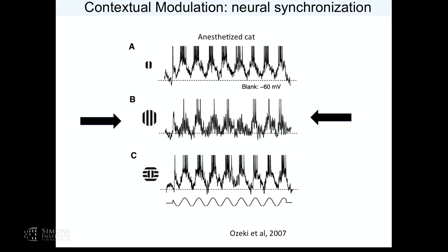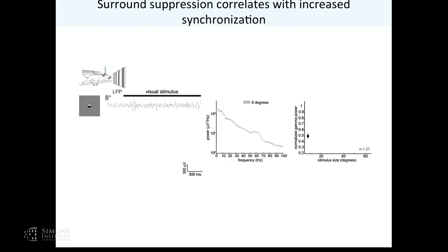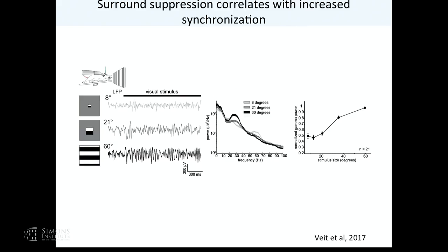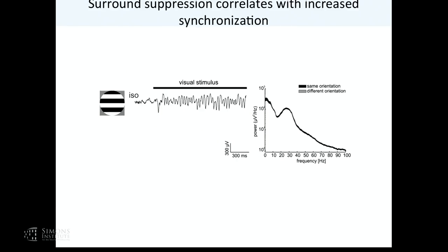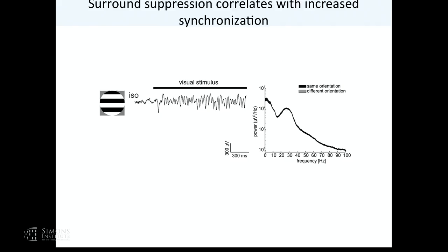In mice, if you put an extracellular electrode in the cortex and increase the stimulus size to drive surround suppression, as surround suppression gets stronger and the population gets very sparse, there's a massive increase in neural synchronization — evident in the local field potential and in the cross-correlation of neuron spiking. Synchronization increases monotonically with size, even as firing rates decrease monotonically. For a cross-oriented grating that produces basically no surround suppression, you see a massive reduction in synchronization. You get much less synchronization between cortical regions representing cross-oriented features.